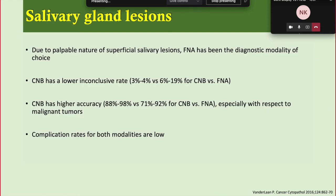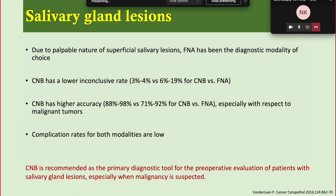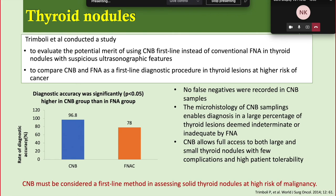For salivary gland lesions, due to their palpable superficial nature, FNAC can be done without ultrasound guidance. However, core biopsy has a lower inconclusive rate and provides more additional information. Complication rates for both modalities are low in superficial lesions. Core biopsy is recommended as the primary diagnostic tool for preoperative evaluation of salivary gland lesions, especially when malignancy is suspected. This was studied by Vanderlaan et al. in 2016. For thyroid nodules, the diagnostic accuracy of core biopsy is 96% compared to 76–78% for FNAC, studied by Trimboli et al. in 2014.